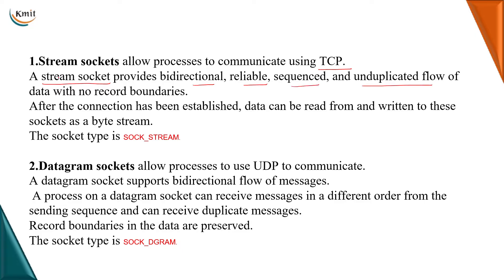As you know, TCP is reliable and connection-oriented, so the stream socket provides bi-directional, reliable, sequenced, and unduplicated flow of data with no record boundaries. Here we establish a connection, then the data is being read or written, and then we close the connection. Where the sockets are transmitting byte streams, the socket type is referred to as SOCK_STREAM, meaning stream sockets.